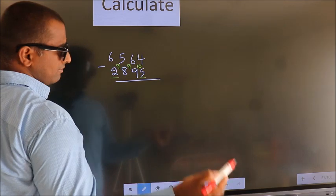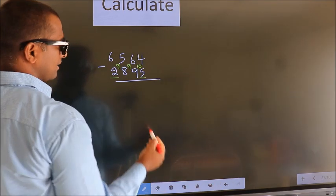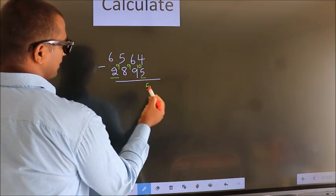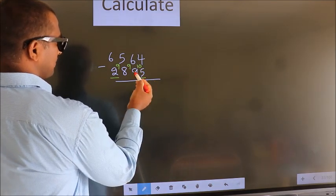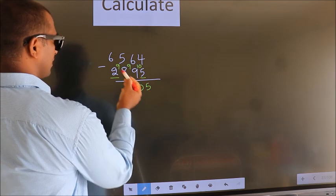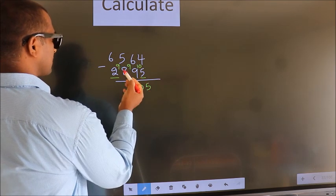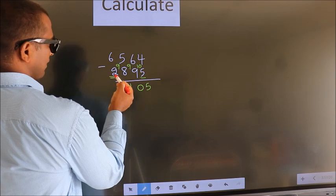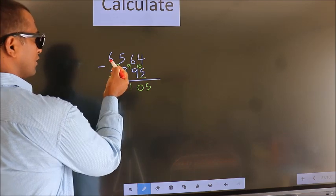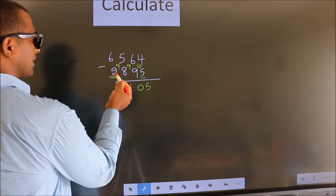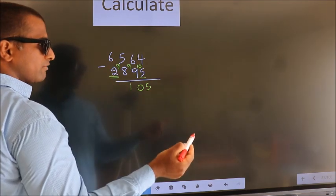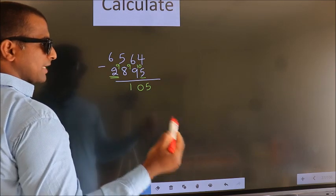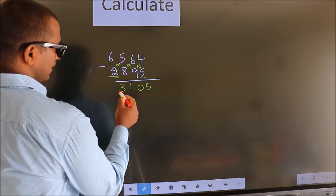Now we subtract. 10 minus 5 is 5. 9 minus 9 is 0. 9 minus 8 is 1. And for the first digit you do 6 minus 2. We get 4. Decrease more by 1. We get 3.